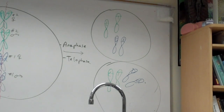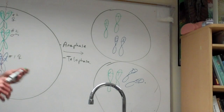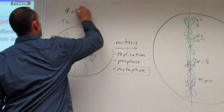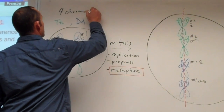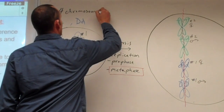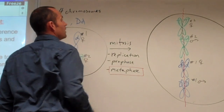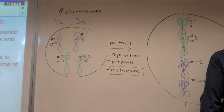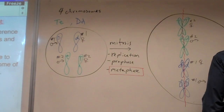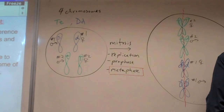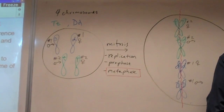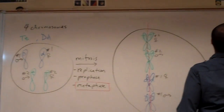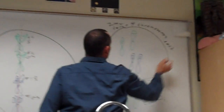If you compare this starting cell to these resulting cells, they're identical. We have four chromosomes in each. Two new cells, each with four chromosomes.